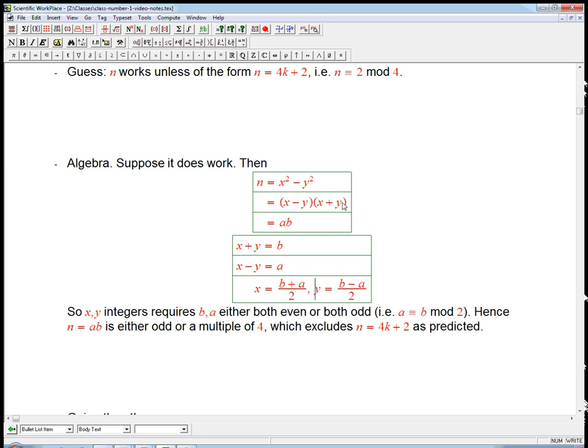So we've got this nice factorization, x - y, x + y. That's actually saying something rather special about n, that it can be factored in that way as a difference of two numbers and the sum of those same numbers. Because if we solve for those mystery numbers x and y,